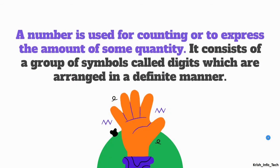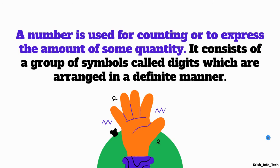First, what are called numbers? A number is used for counting or to express the amount of some quantity. It consists of a group of symbols called digits which are arranged in a definite manner. We are using numbers for counting something or to express the amount — like how many chocolates, pencils, or pens I have. These numbers consist of a group of symbols called digits arranged in a definite manner.